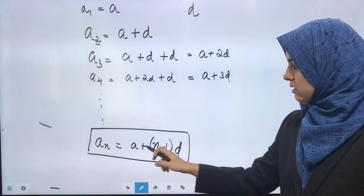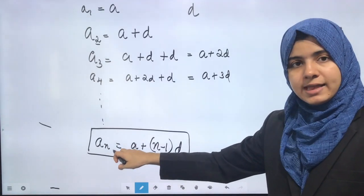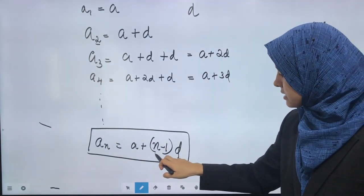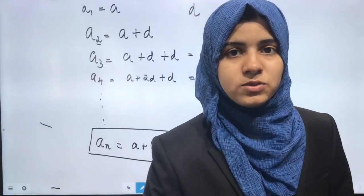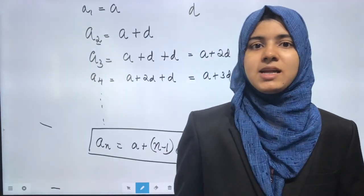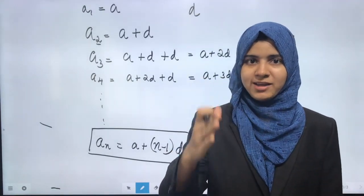The nth term is A plus (N minus 1) D, where N minus 1 is the coefficient of D. See you in the next class. Goodbye!